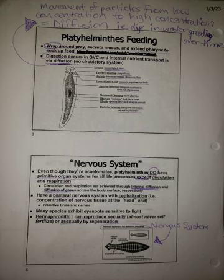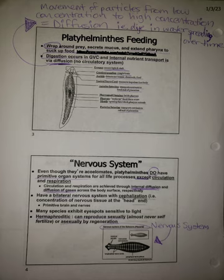When it comes to feeding, platyhelminthes wrap around prey, secrete mucus, and extend their pharynx to suck up food. Digestion occurs in the gastrovascular cavity, and internal nutrient transport happens via diffusion — the movement of particles from low concentration to high concentration — much like what happens with dye when you put it in water; it spreads over time.